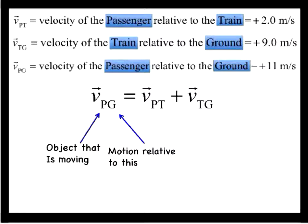For example, V-sub-TG and V-sub-PG are the velocities of the train and passenger measured relative to the ground respectively. The ordering of the subscript symbols follows a definite pattern that can often assist in correctly constructing the vector equation for relative velocity problems. In our equation above, the first subscript on the left side is also the first subscript on the right side, and the second subscript on the left side is the last subscript on the right side.